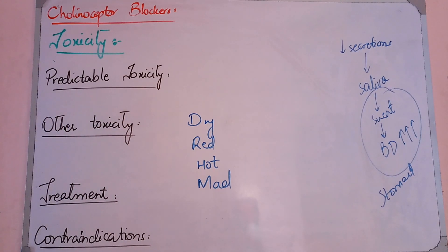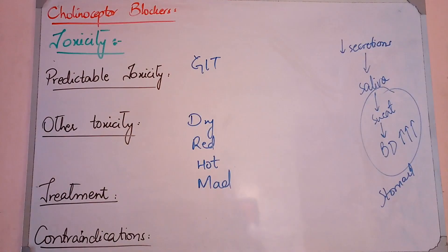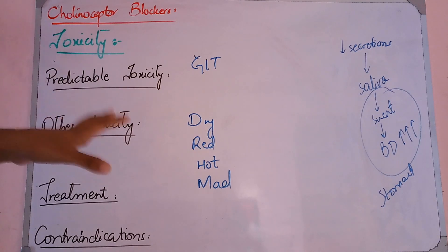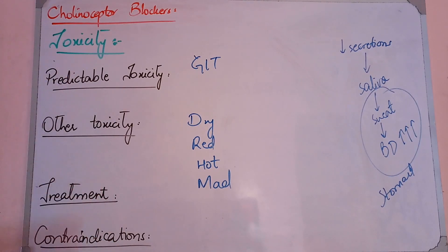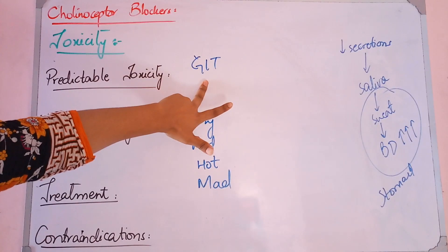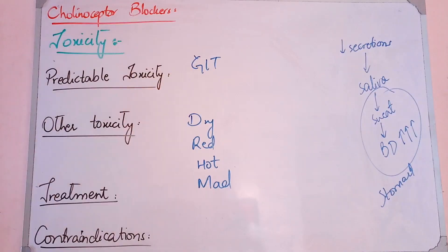The second effect is on the GIT. Normally, the parasympathetic system promotes GIT activity. But because the parasympathetic system is blocked and inhibited, the food will become stagnant. The biggest problem will be at the point of defecation — when there is no parasympathetic tone in the colon or large intestine, constipation occurs. So in GIT, there is constipation.